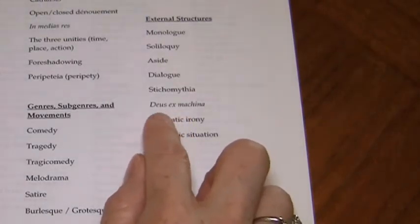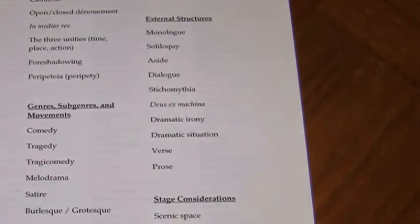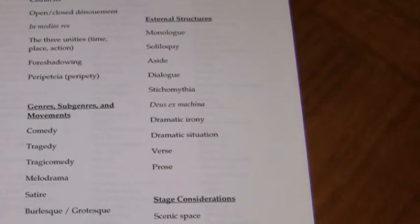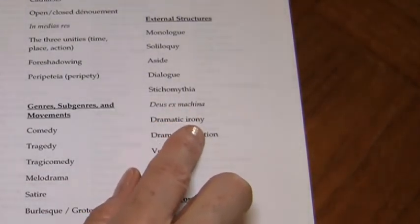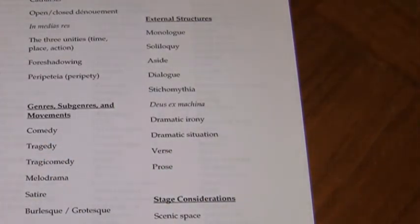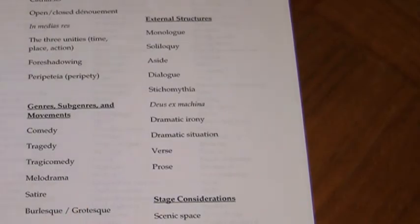Deus ex machina is when the gods come down from the machine — a Greek term for what really happened at the end of Greek plays when they couldn't resolve the problem and the gods had to come down and figure it out for man. Sometimes you'll sense that this is what's happening in comic plays, and it's rare in tragedy. Dramatic irony — this is of course just one form of irony, but you need to be aware of it. The dramatic situation is simply describing the context.